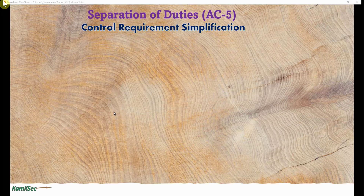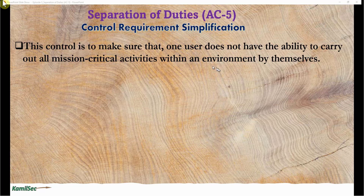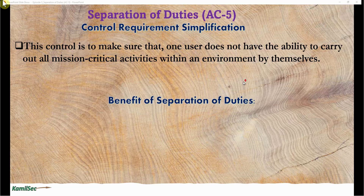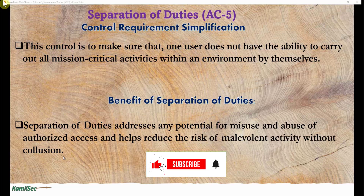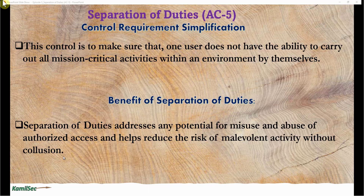Now let's look at the control requirement simplification. This control ensures that one user does not have the ability to carry out all mission-critical activities within an environment by themselves. The benefit of separation of duties is that it addresses any potential for misuse and abuse of authorized access and helps reduce the risk of malevolent activity without coalition — meaning you would need to connive or collude with someone else to achieve a malicious intent; by yourself, you cannot achieve it.